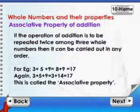Associative property of addition. If the operation of addition is to be repeated twice among three whole numbers, then it can be carried out in any order. For example, 3 plus 5 plus 9 is equal to 8 plus 9, which is equal to 17. Again, 3 plus 5 plus 9 is equal to 3 plus 14, which is again equal to 17. This is called the associative property.